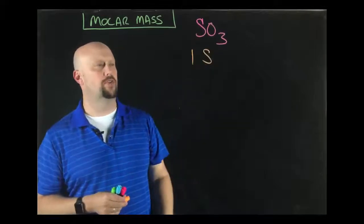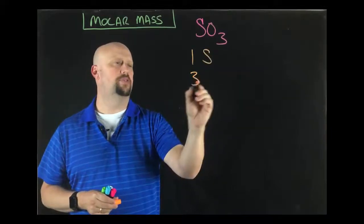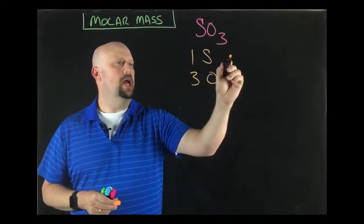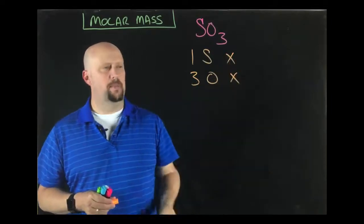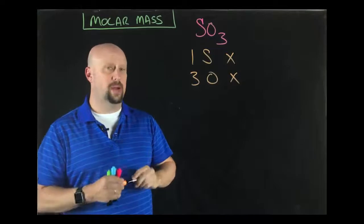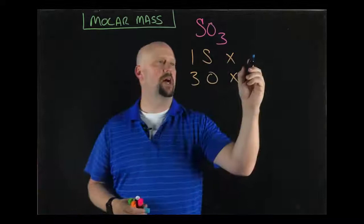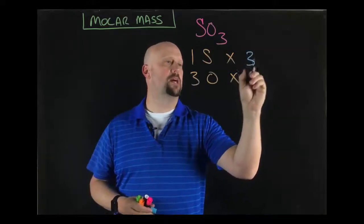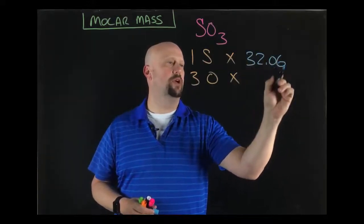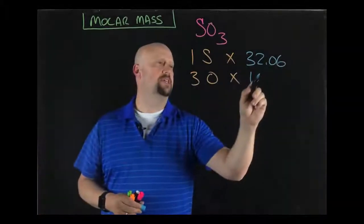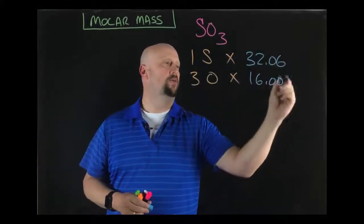The first thing I'm going to do is break this down into what it is. So I've got one sulfur, I have three oxygens, and I'm going to multiply that by the individual gram atomic masses of each of them from the periodic table. If you look on the periodic table to find your individual gram atomic masses, we've got a 32.06 for sulfur, we have a 16.00 for oxygen.